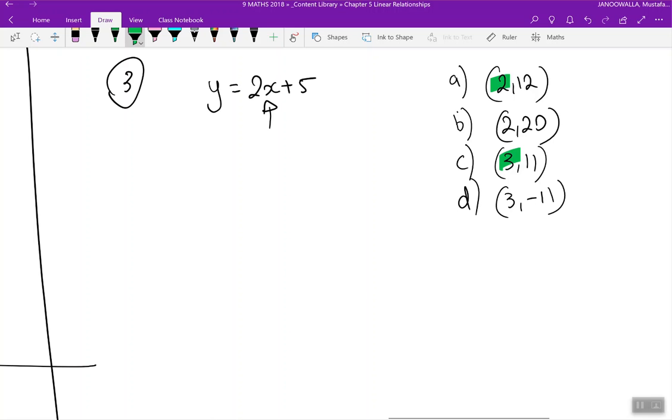If I get the correct y value, then I'll pick which of those options A to D is correct. So let me start by putting 2 in for x. When x is 2,